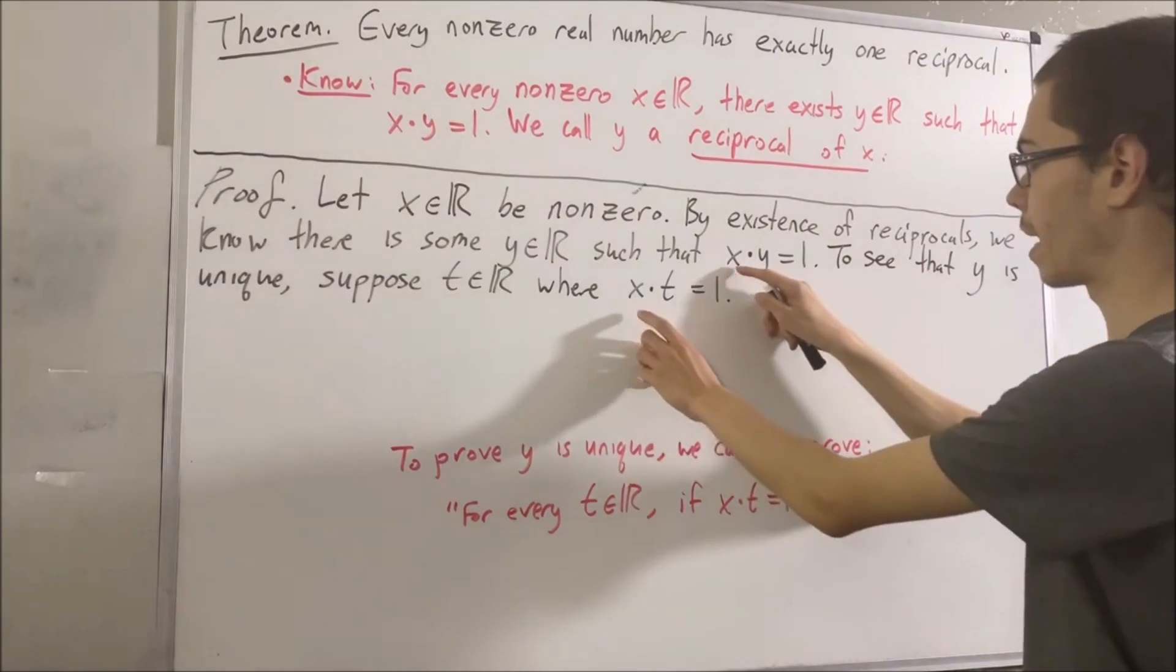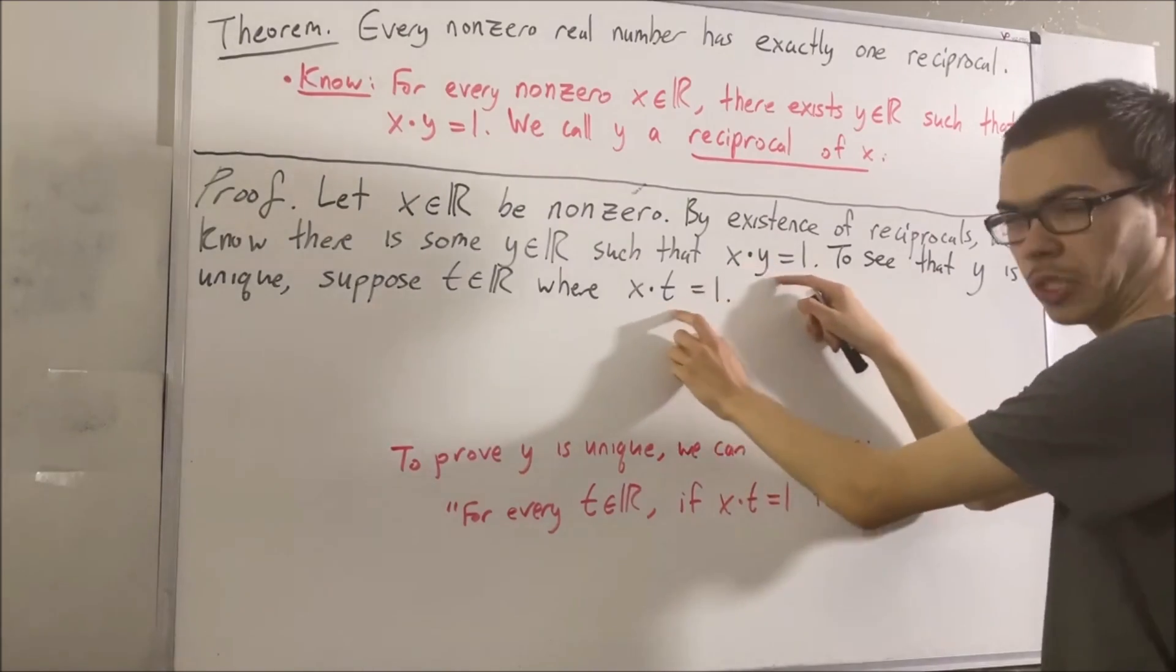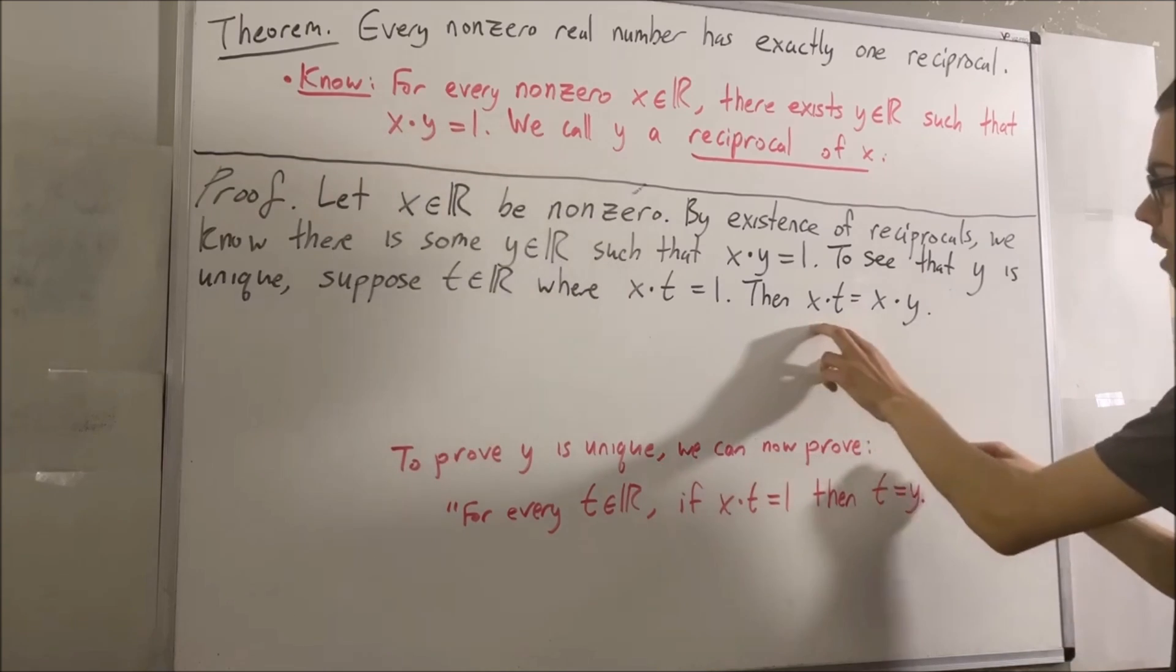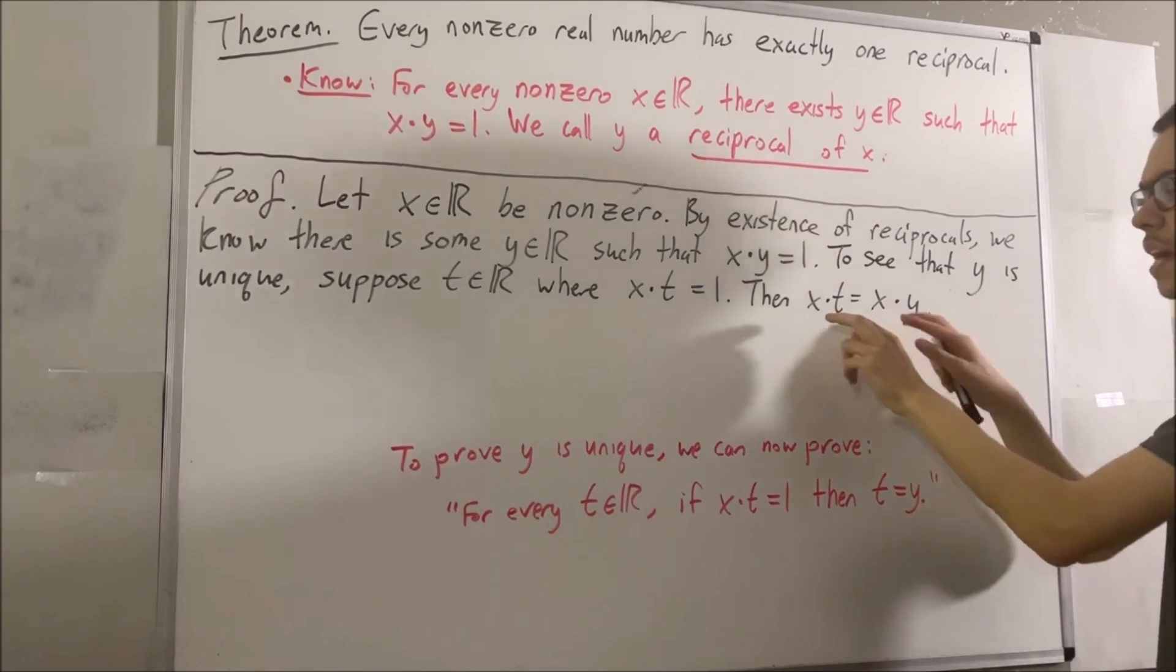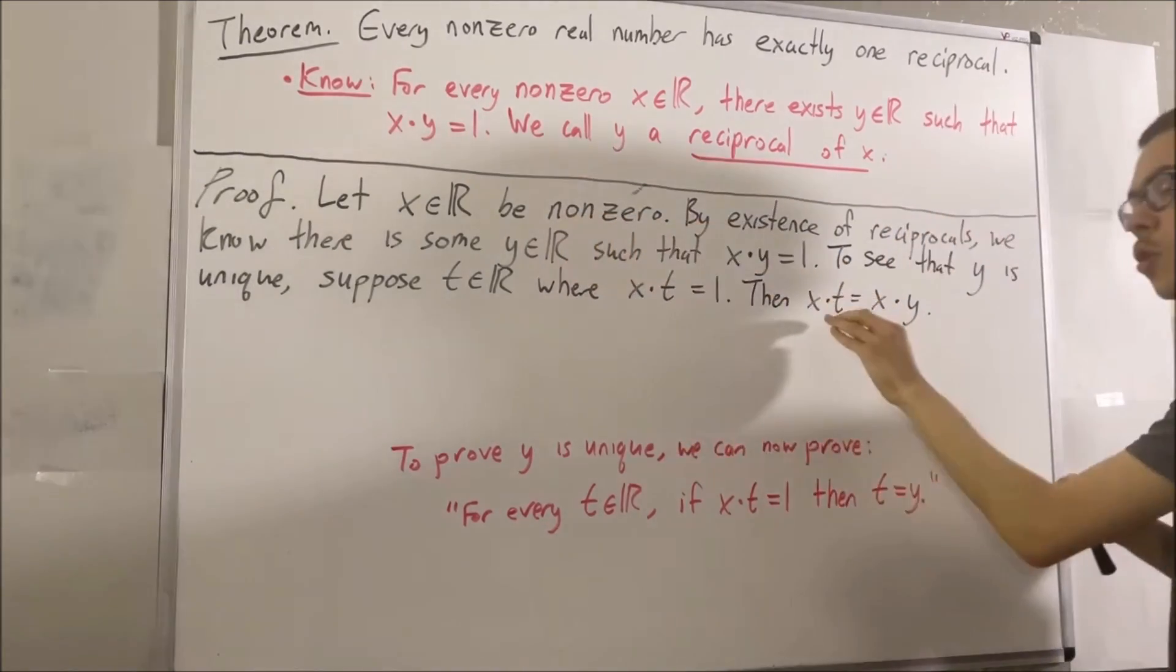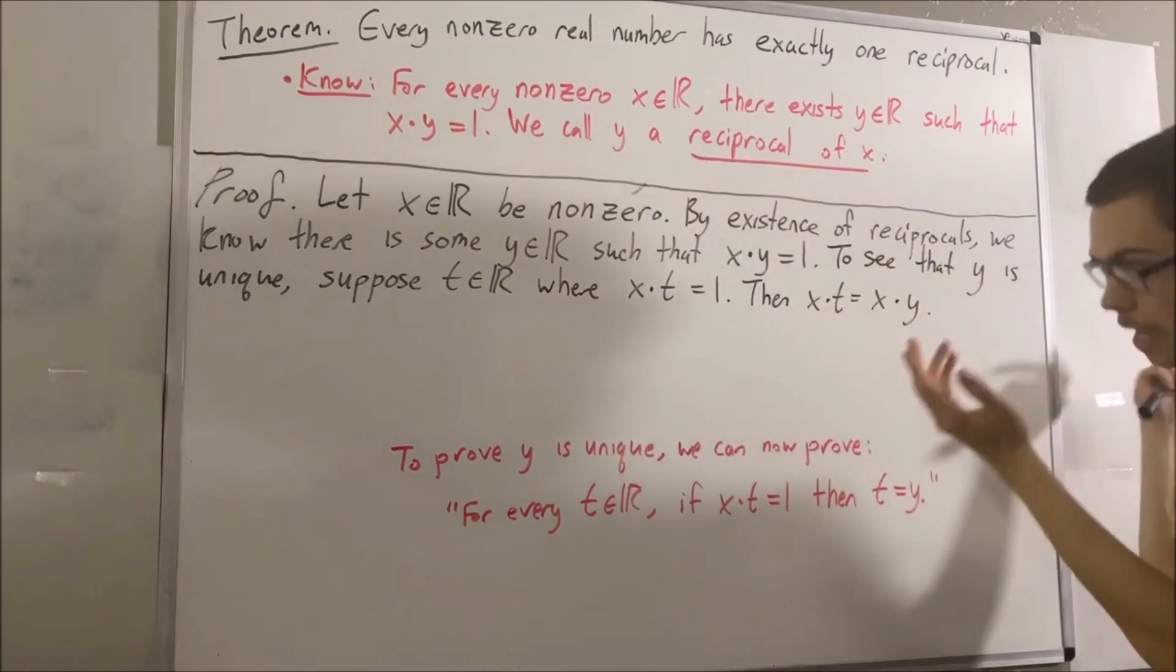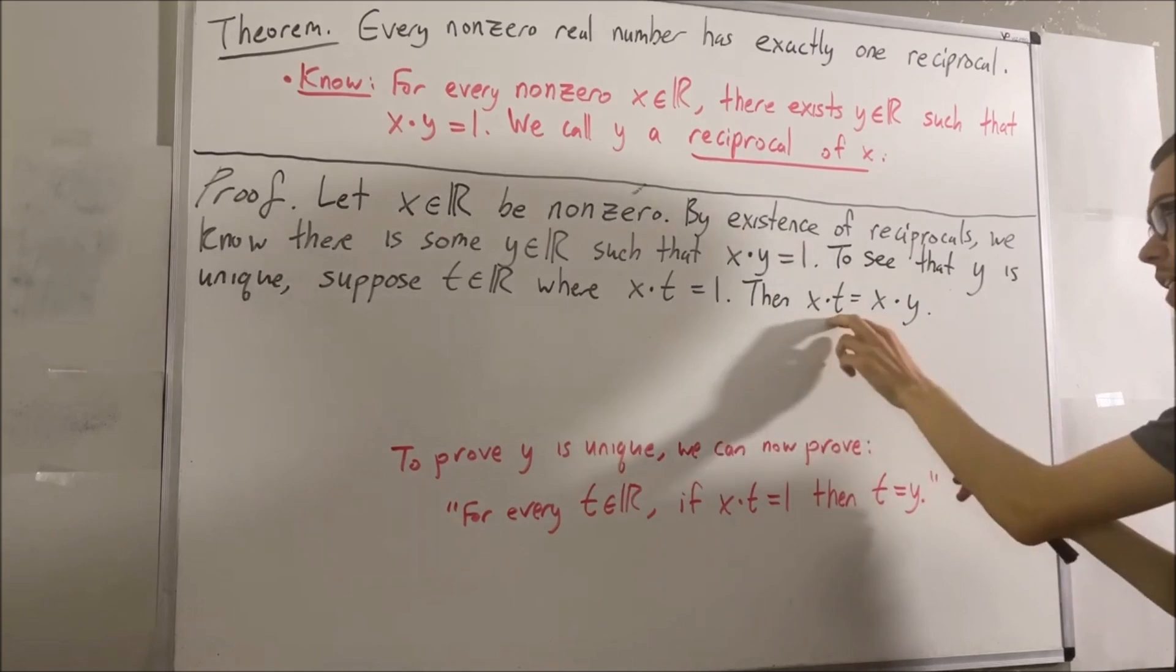Now, since both x times y and x times t are equal to 1, they must be equal to each other. So we have that x times t is equal to x times y. But notice x is a non-zero real number. So we can think of it as dividing x on both sides of the equation, and we would obtain that t is equal to y.